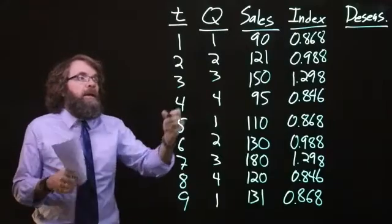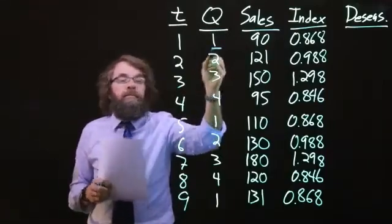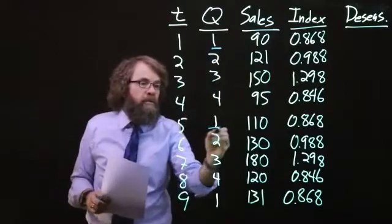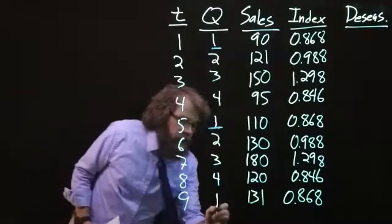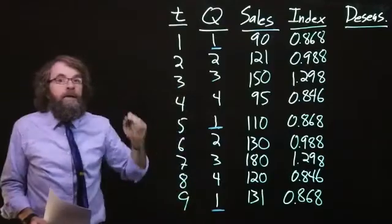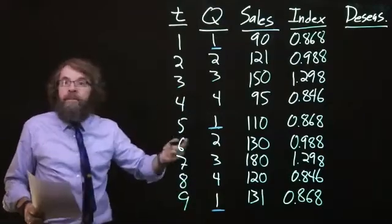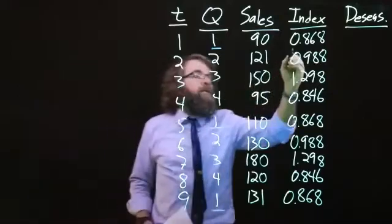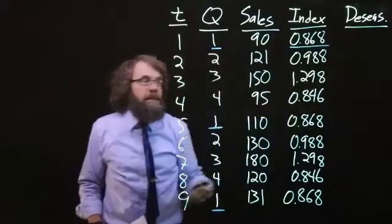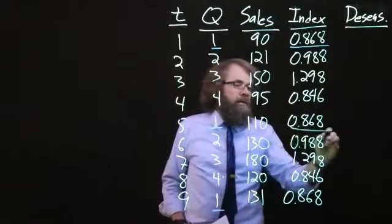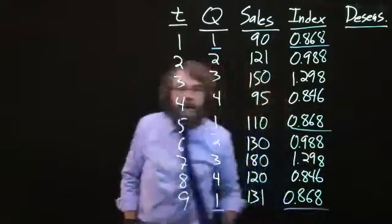And so, we have the first quarter of the first year, the first quarter of the second year, and the first quarter of the third year. You can see that every time we are talking about the first quarter of a year, we use the seasonal index for the first quarter, 0.868.